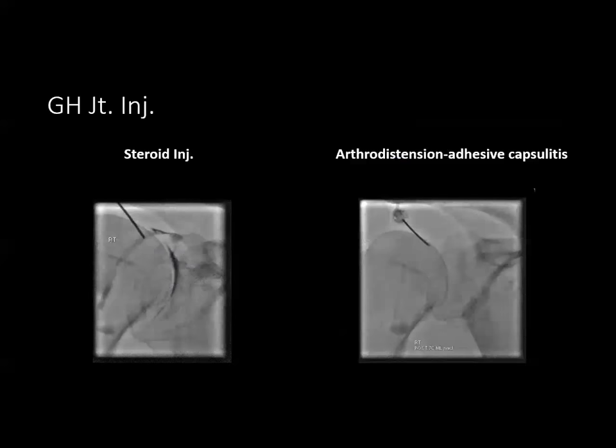Adhesive capsulitis is a clinical diagnosis but has MRI features, so a pre-procedure MRI is important. Before arthrodistension, we also confirm the patient has a physiotherapy appointment immediately after the procedure. We inject steroid in the same manner as any other joint, then distend the joint with normal saline — the amount depends on the patient. The purpose is to rupture the shoulder joint capsule and break adhesions. The patient then goes immediately to physiotherapy to further help regain movement, since the main problem in adhesive capsulitis is restricted range of motion.